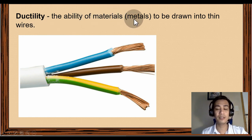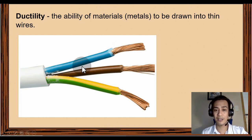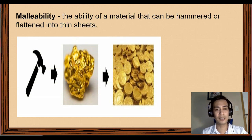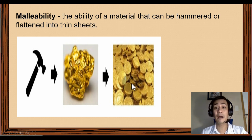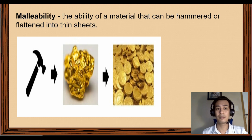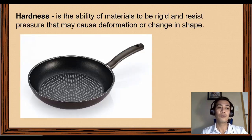The third characteristic is ductility — the ability of metals to be drawn into thin wires. An example is copper wire, which is drawn inside rubber covering to protect us from electric shock. The fourth characteristic is malleability — the ability of a material to be hammered or flattened into thin sheets. The best example is gold, which can be shaped into jewelry by being hammered into a flat form and a new shape.